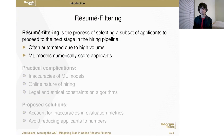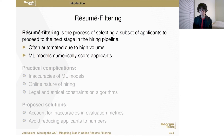Resume filtering is the process of selecting a subset of applicants to proceed to the next round of hiring. You can think of it as selecting which applicants to grant interviews to. Many companies have a high volume of applications, so this process is often automated — typically by having a machine learning model numerically score applications, and then using those scores to determine who proceeds to the next round.